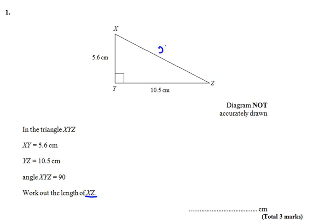All we need to do is use Pythagoras theorem. Let's set it up. x squared is equal to 5.6 squared plus 10.5 squared. We're adding because we've got two shorter sides and we want to find the hypotenuse.